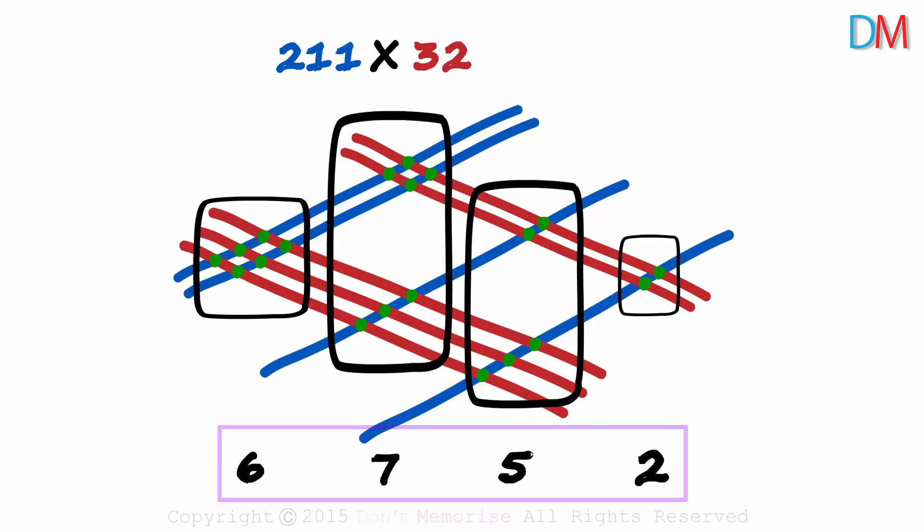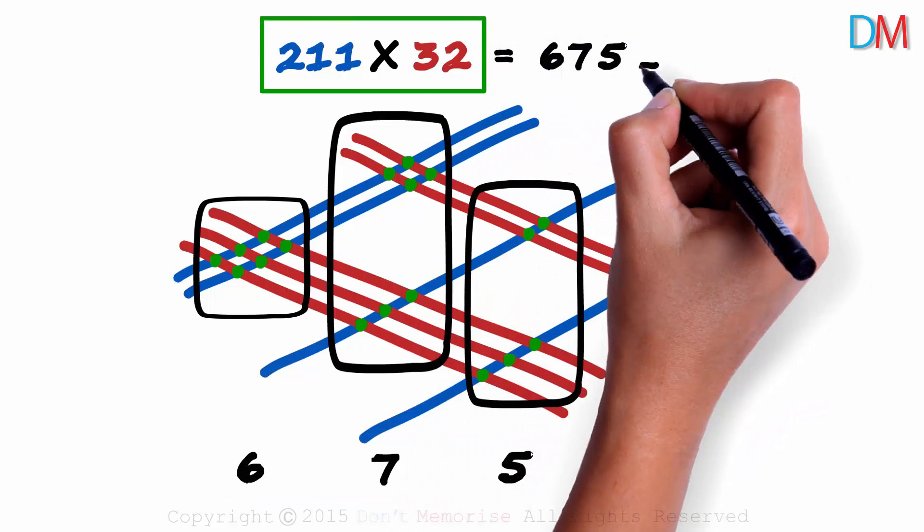This is the product. Two hundred and eleven times 32 gives us 6752.